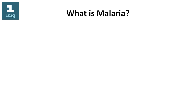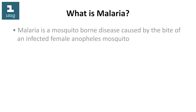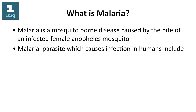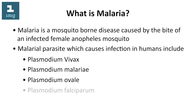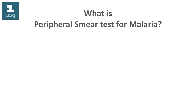What is malaria? Malaria is a mosquito-borne disease caused by the bite of an infected female Anopheles mosquito. Malarial parasites which cause infection in humans include Plasmodium vivax, Plasmodium malariae, Plasmodium ovale, and Plasmodium falciparum.